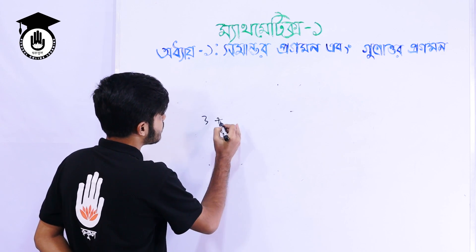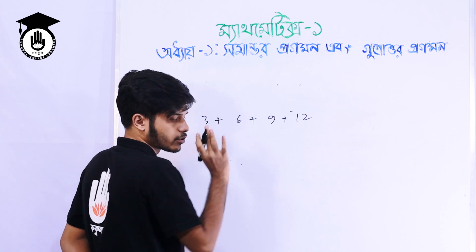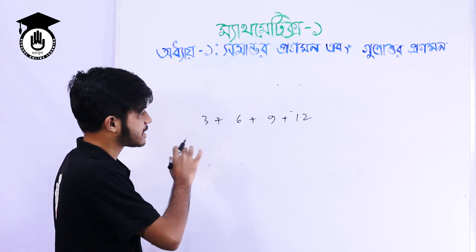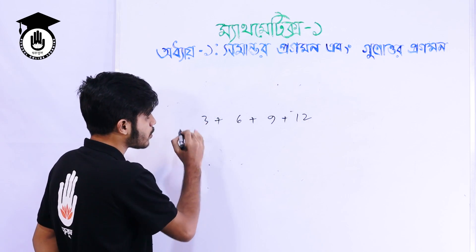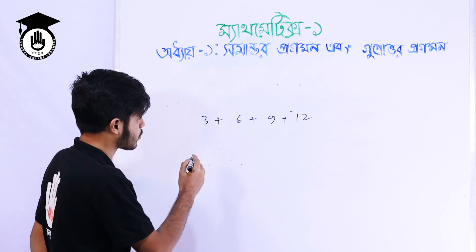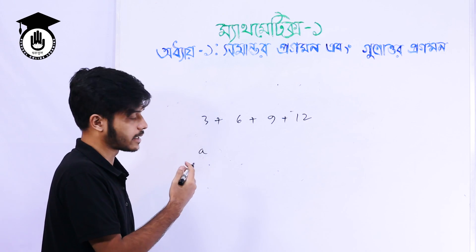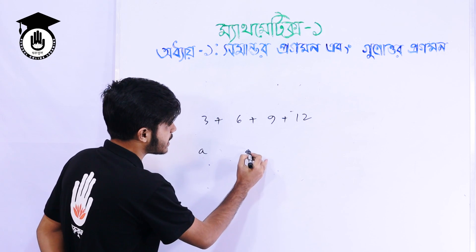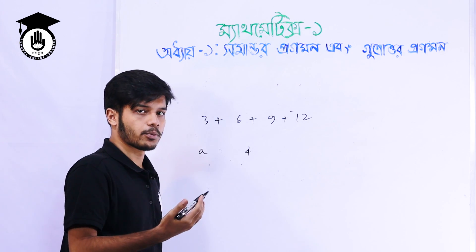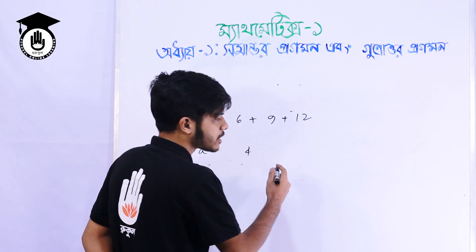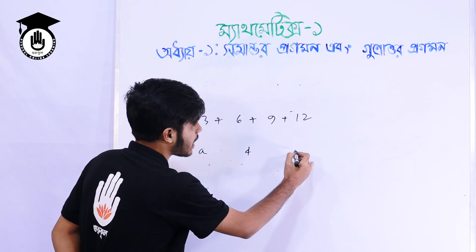This is 3 plus 6 plus 9 plus 12. This will be written as well. There are 4 points. The first point is A. The point is D.